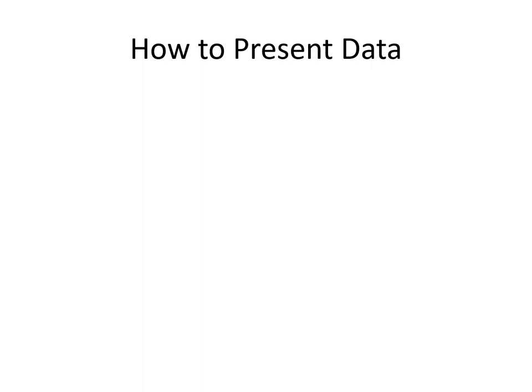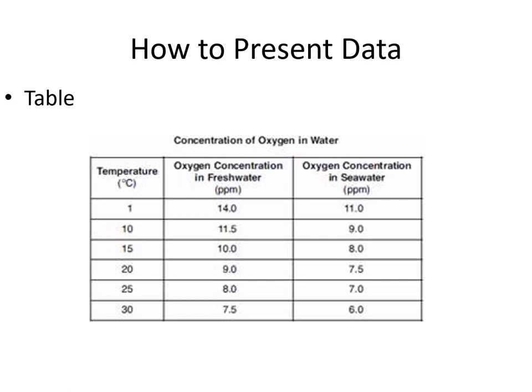There are various ways to present data, and the simplest one is by showing them a table, such as this simple table showing the relationship of temperature with the concentration of oxygen in water. It will only take you about 5 seconds to realize that the relationship of temperature and oxygen in water is an inverse relationship. As you increase temperature from 1 to 30 degrees, you see a decrease in the oxygen concentration in freshwater as well as in seawater. This is quite easy to understand because you only have a few data points.